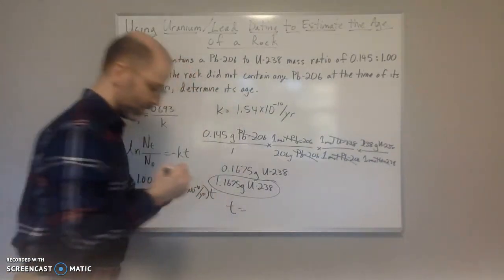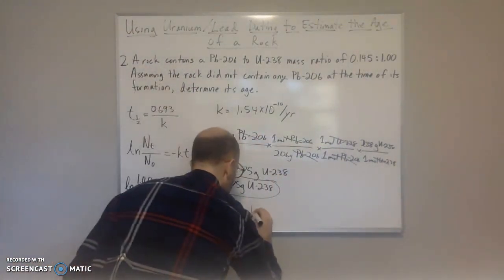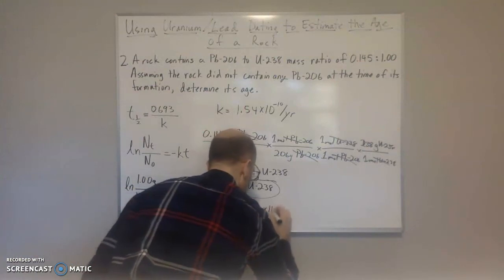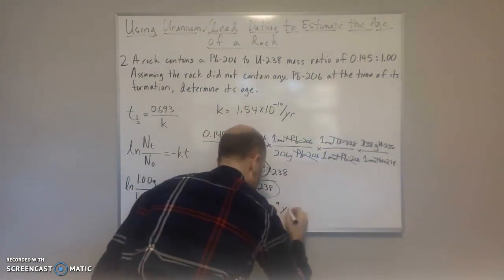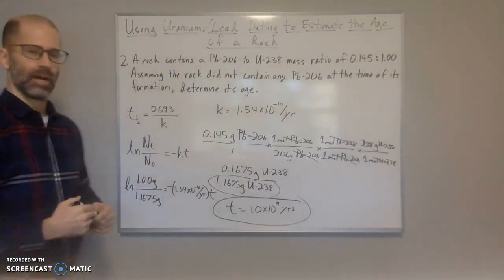And so what we have here is we have natural log of 1.00 grams for the amount we have at time T over the original amount equal to negative KT. And when we solve for T, we get 1.0 times 10 to the 9 years. So that is it. That's how you do it.